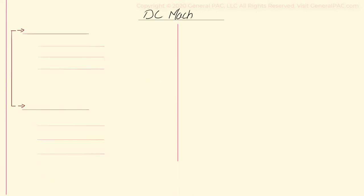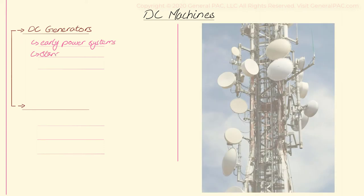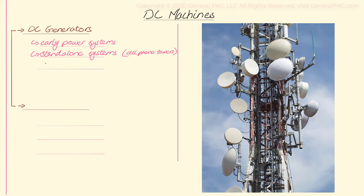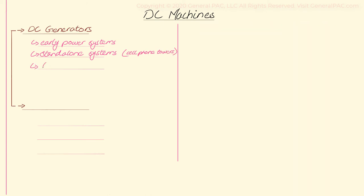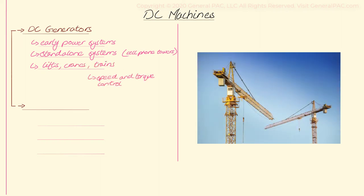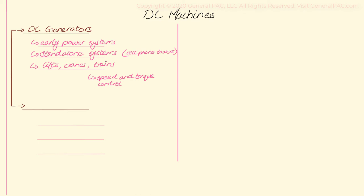Now we will talk about DC machines. Just like AC machines, we have two types: DC generators and DC motors. The earliest power systems were DC systems, but these have been replaced by AC systems. Electricity generation was done by DC generators until about the late 1800s. Now DC generators are used in small power supplies and portable generators, for example as power sources for standalone cellular telephone towers. They are also used to control speed and torque of motors in lifts, cranes, and trains, and as voltage regulators to compensate for voltage drop in DC distribution feeders such as railways.